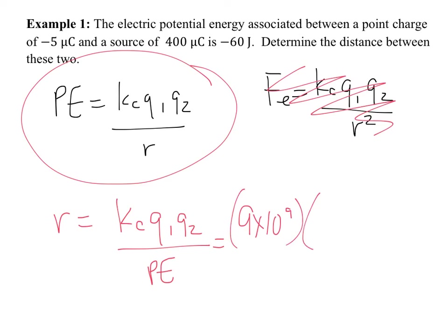Kc is given, always, on your formula sheet. Coulomb's constant. The charge on the particle is negative 5 times 10 to the negative 6 Coulombs. Because it's micro Coulombs. The charge on the source is 400 times 10 to the negative 6 Coulombs over the amount of potential energy. Take a minute, calculate. Try this, please. Don't just sit there. Make sure you're practicing. Take your calculator out. Anything that has scientific notation or looks a little bit different, you should always practice first.